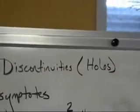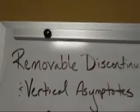Removable discontinuities, which are sometimes called holes, and vertical asymptotes. Start simple.